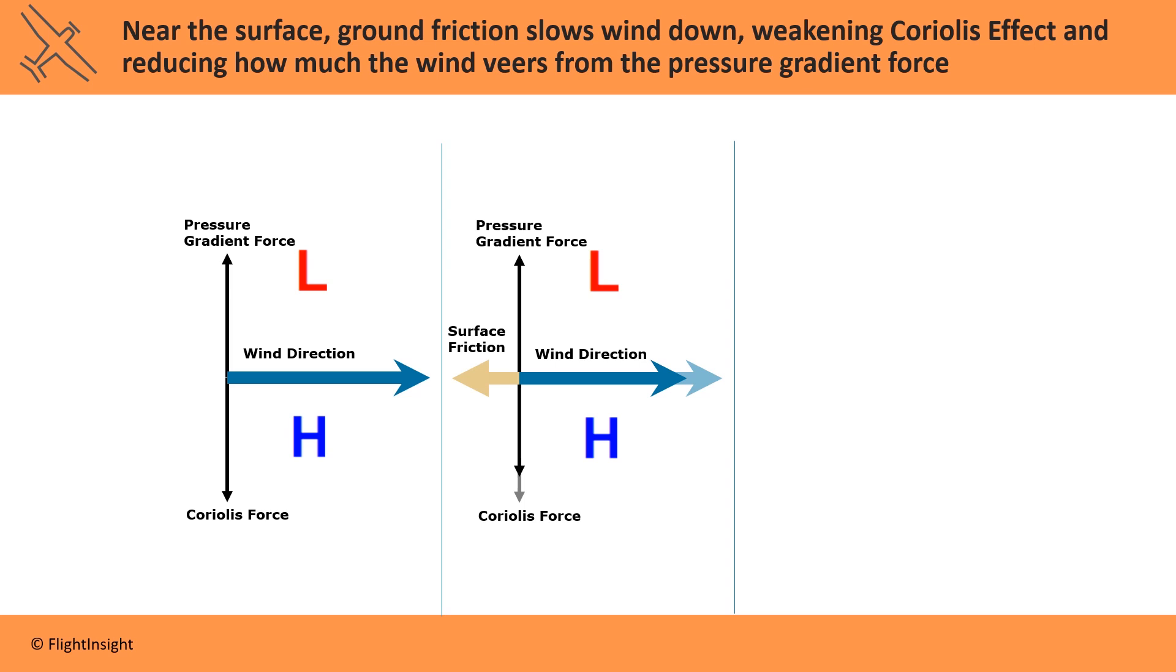The pressure gradient force is unchanged. Surface friction doesn't change the effect of having high pressure and low pressure areas really close to each other. What this means is that the wind direction changes near the surface and curves in toward the low pressure area.